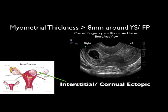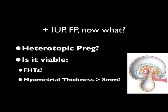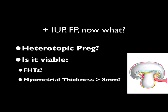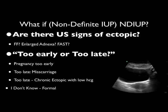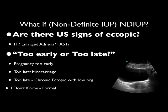This particular patient had a bicornuate uterus which puts them at risk for a corneal pregnancy. At this point we've talked about the scenarios if you've identified an intrauterine pregnancy or fetal pole, considered heterotopic pregnancy, assessed viable pregnancy via fetal heart tones, and confirmed myometrial thickness greater than eight millimeters. What about the scenario when you don't see a definite IUP? There are two main questions to answer: first, are there any ultrasound signs of ectopic pregnancy? Do you see any free fluid or enlarged adnexa?